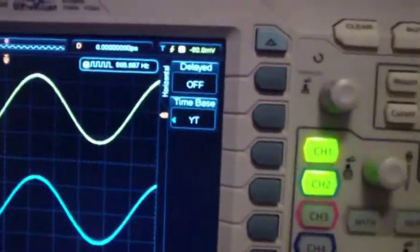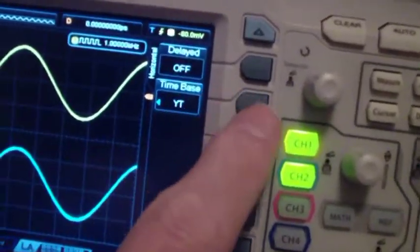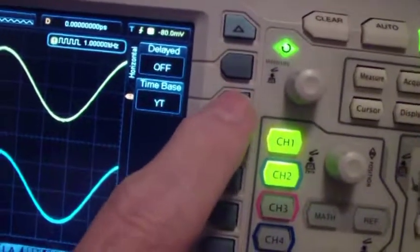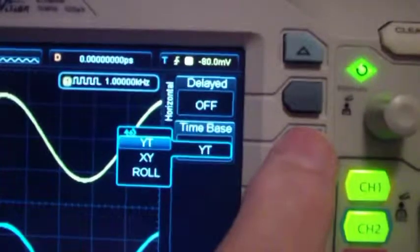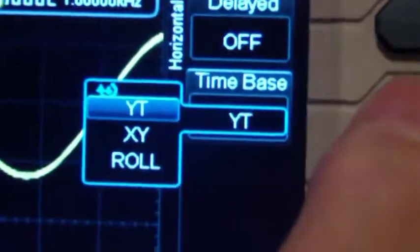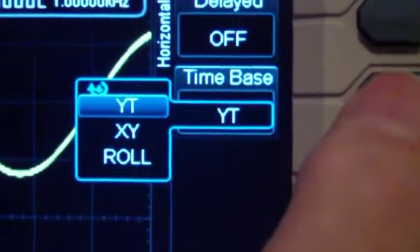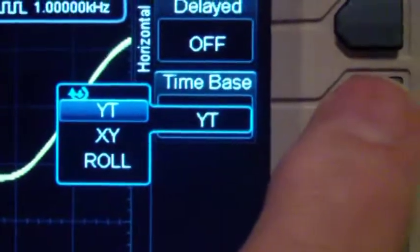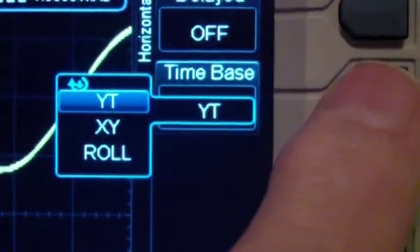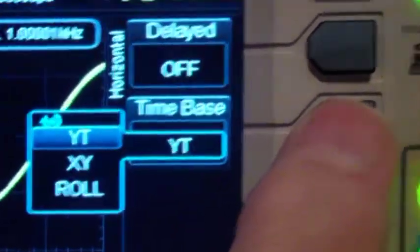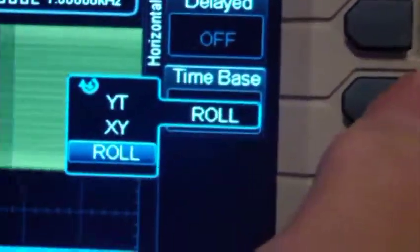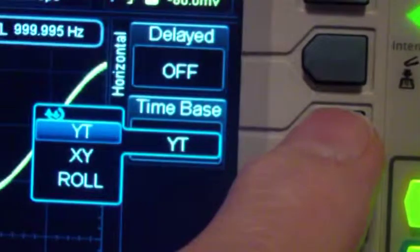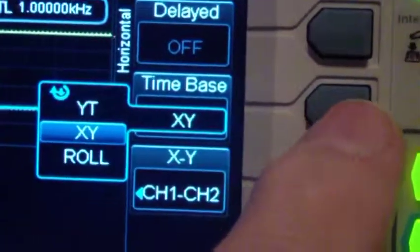So if I press the menu, this comes up. Then if I press the time base, you'll see that it has YT, XY, and roll. So what I'm going to do is press that once, and you see it switches. Now we're going to switch to XY.